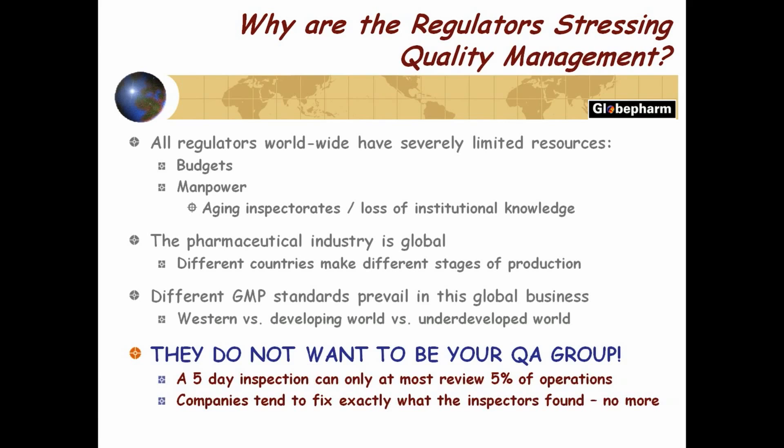That gives the authorities a problem. When Upjohn used to exist — remember Upjohn? Became Pharmacia, became Pfizer, became nothing — they developed things like Minoxidil all on the same site in Kalamazoo. API manufacture, development, every step including distribution was in Kalamazoo. FDA could go there for a week and be done. Now it's five separate trips around the world — their budget can't stand it. That was the push for FDA to join PICS. And there are different standards in different parts of the world. Lastly, they don't want to be your QA group.